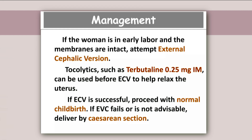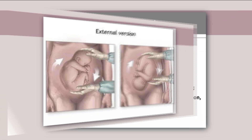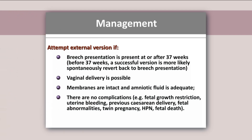In the management of breech presentation: if the woman is in early labor and membranes are intact, attempt external cephalic version. A tocolytic such as terbutaline 0.25 mg IM can be used before external cephalic version to help relax the uterus. If external cephalic version is successful, proceed with normal childbirth. If it fails or is not advisable, deliver by cesarean section. External version can be attempted if breech presentation is present at or after 37 weeks, membranes are intact, amniotic fluid is adequate, and there are no complications such as fetal growth retardation, uterine bleeding, previous cesarean delivery, fetal abnormalities, twin pregnancy, hypertensive disorders, or fetal death.